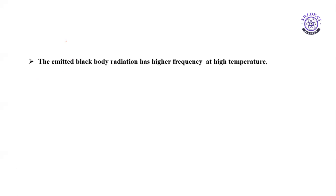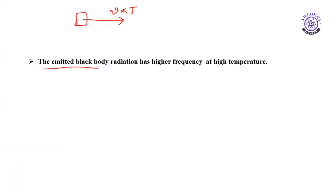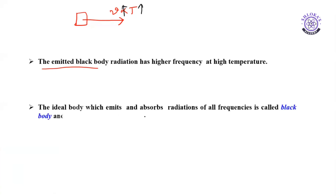From these observations: the emitted black body radiation has a higher frequency at higher temperature. Frequency (nu) is directly proportional to temperature — if the temperature is higher, the frequency of radiation coming out from the hot body or black body also increases. The ideal body which emits and absorbs radiations of all frequencies is called a black body, and the radiation emitted by such a body is called black body radiation.